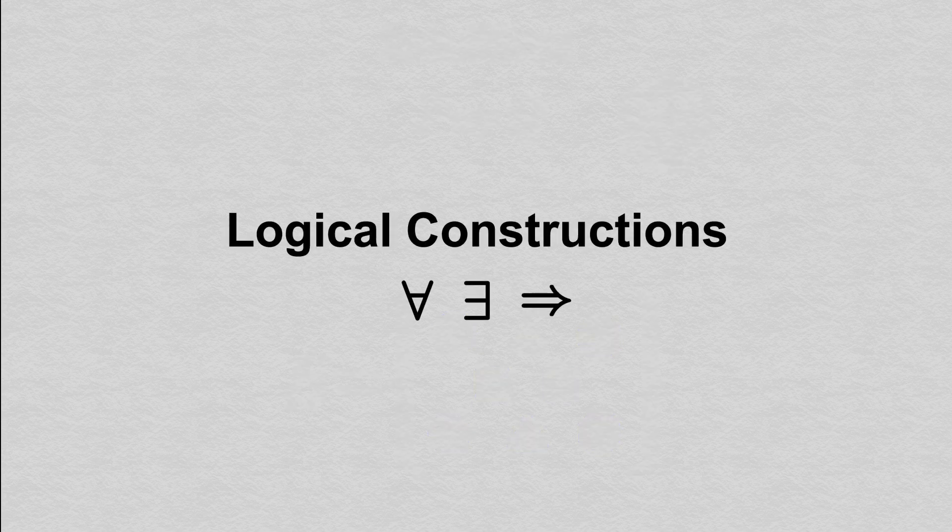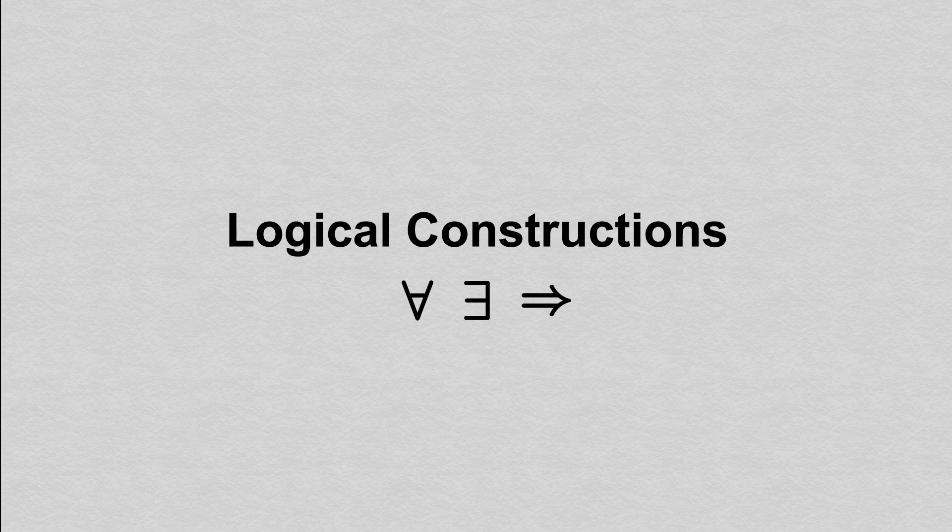Believe it or not, almost all of the logical definitions we use in mathematics are built from these three basic constructions, so we'll want to learn them quite well. We've seen examples of what these statements mean and gained some intuitive sense of them. But what are our mechanics for handling them in formal proofs?